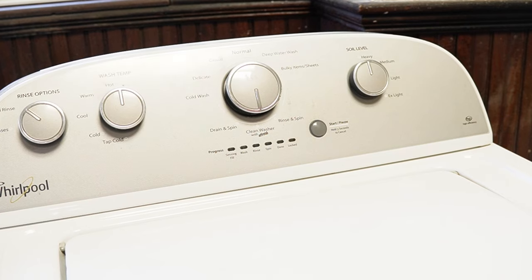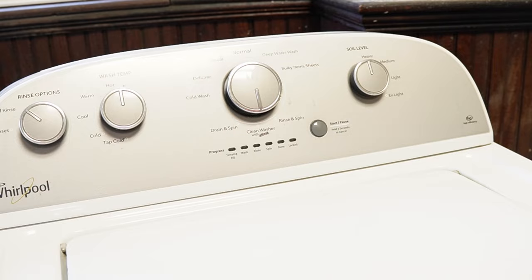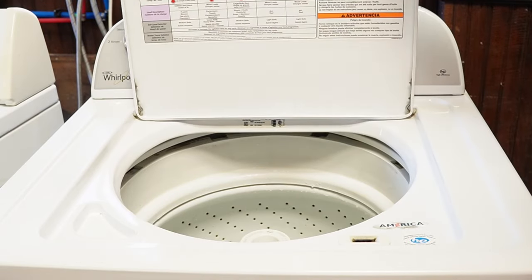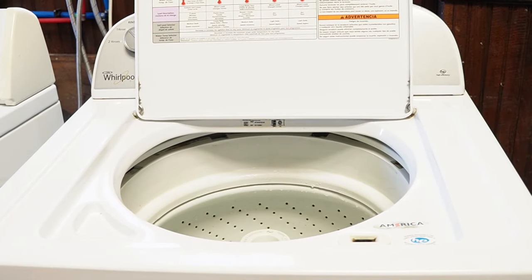This will turn all the lights off and you are now in the manual parts testing mode. Now before we go further, it may be a good idea to bypass this lid lock so you can visually inspect what's going on inside the washer drum when it's running.